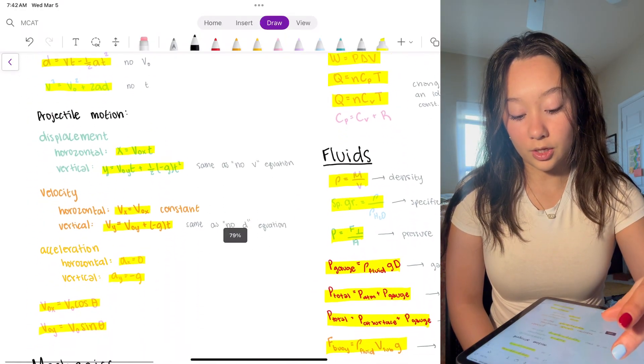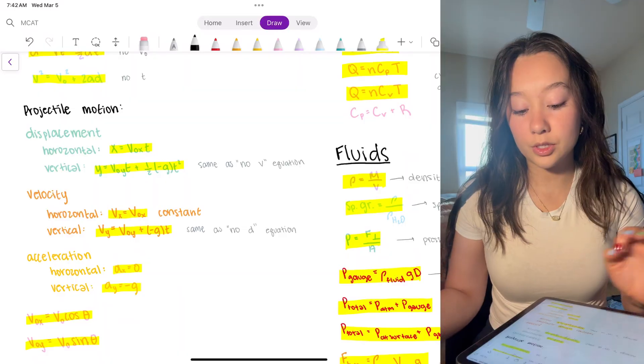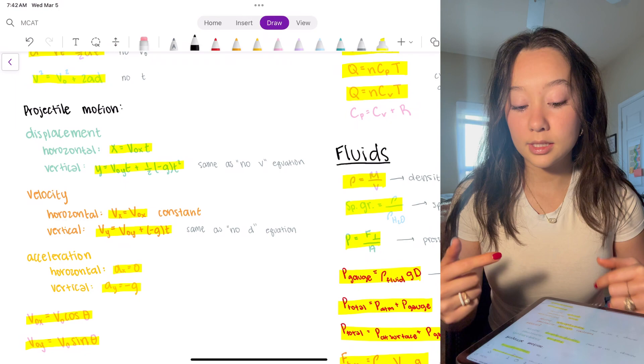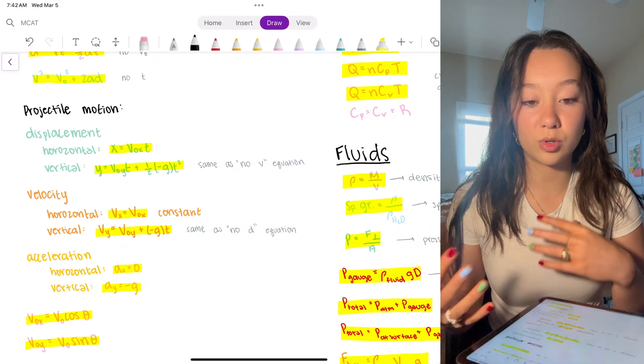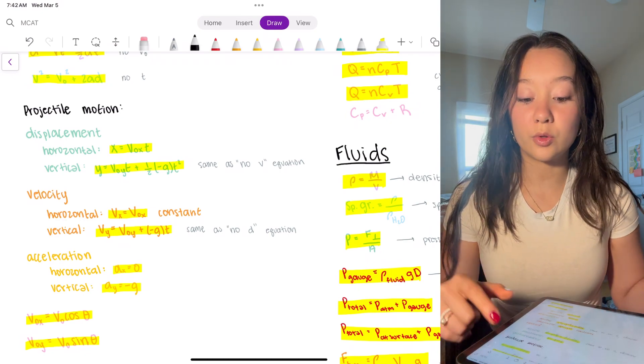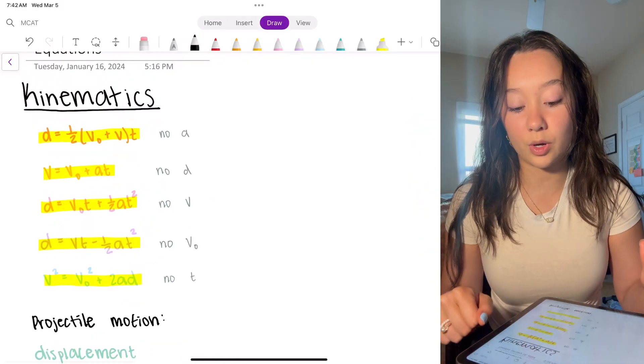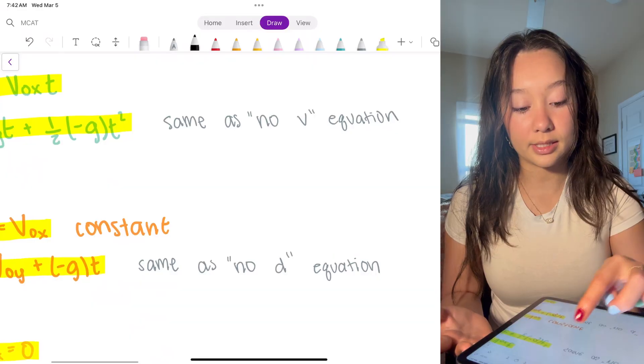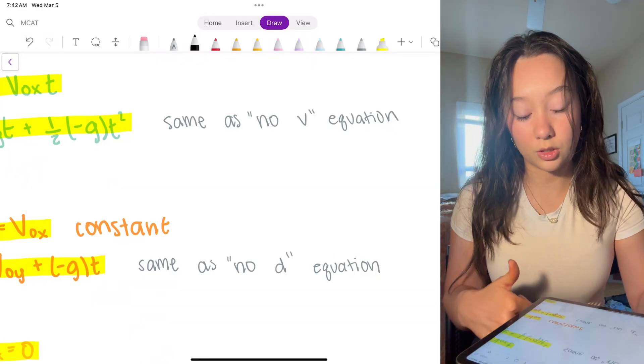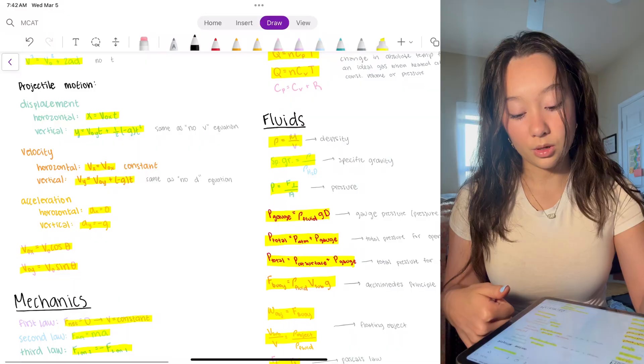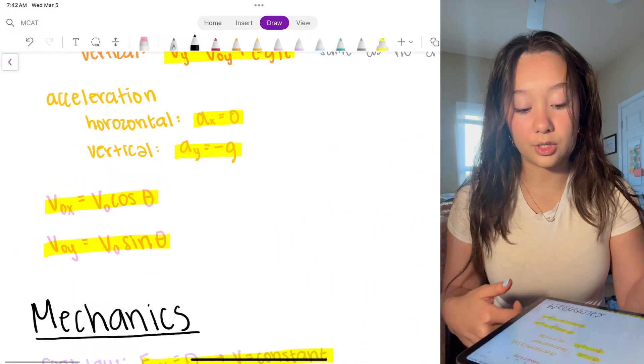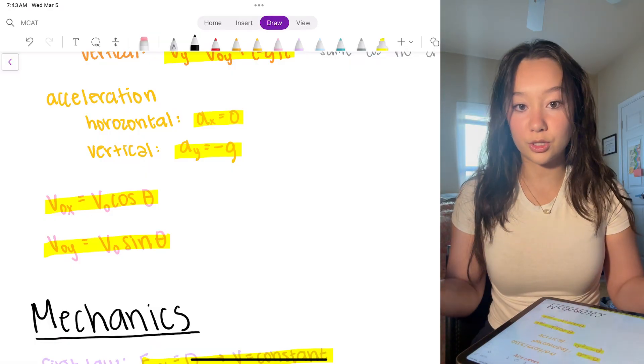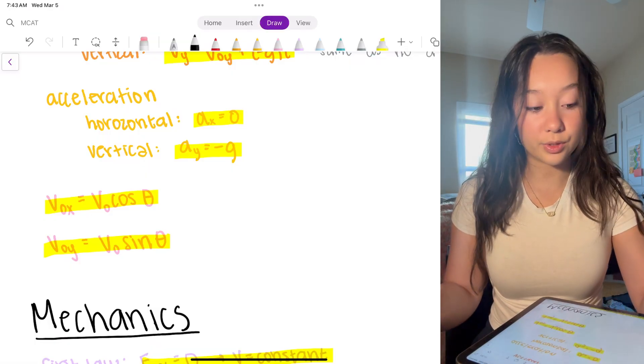Next if we go down to projectile motion, this has to do with displacement and velocity of horizontal and vertical projectile motion. This is helpful to know if you're not comfortable with physics, but if you know the big five equations really well this is what these reduce to. And I wrote here off to the side it's the same as like no v equation or same as no d equation. So moving on and then these velocity, cosine, sine, again you don't need to memorize these because if you know how to draw out your free body diagram it'll show it to you for itself, but this is also just helpful to know.